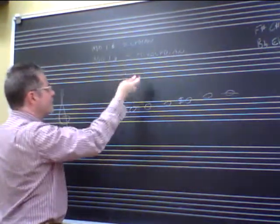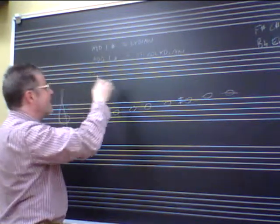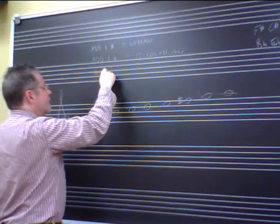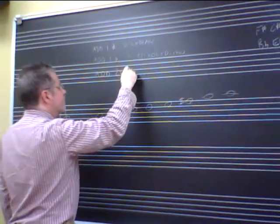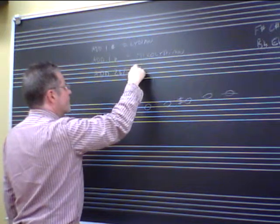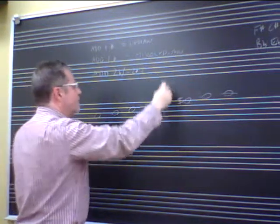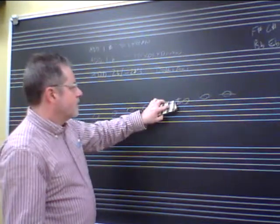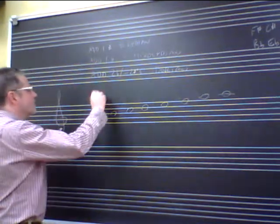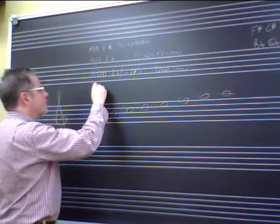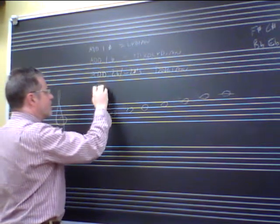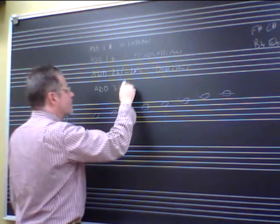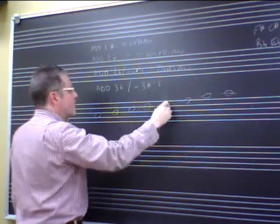If I subtract another sharp—wait, I got to talk about this right—add a flat or subtract a sharp. So add two flats or subtract two sharps, then I have Dorian. And if I subtract three sharps—or add three flats or subtract three sharps—I have A Aeolian.